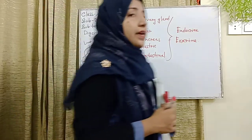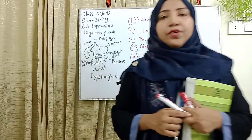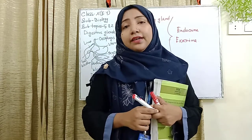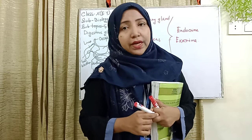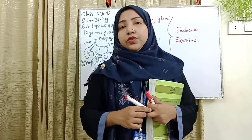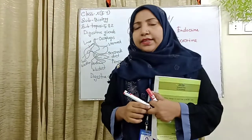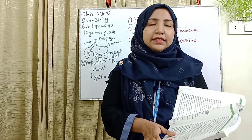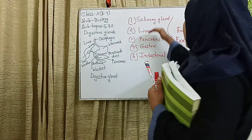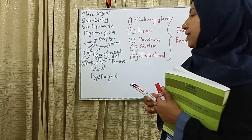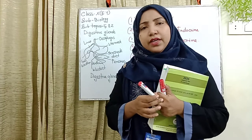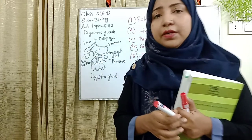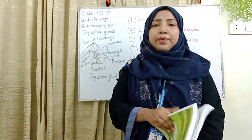Our first topic is the salivary gland. The salivary gland has basically three pairs of glands. First is the parotid gland, second is the submaxillary gland, and third is the submandibular and sublingual gland. The salivary gland contains enzymes and water. The enzyme is the ptyalin, along with enough water.